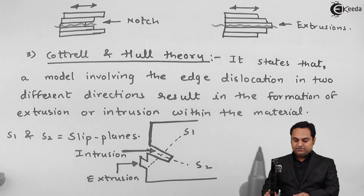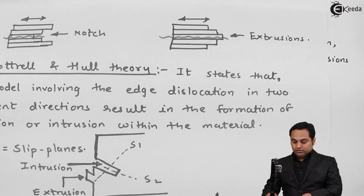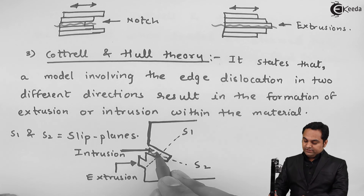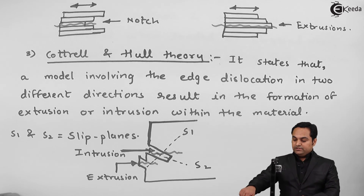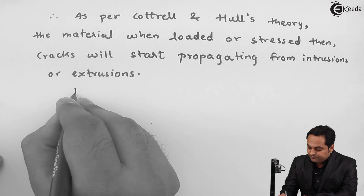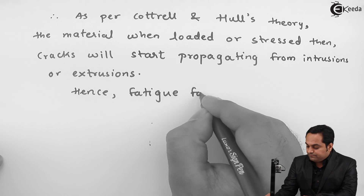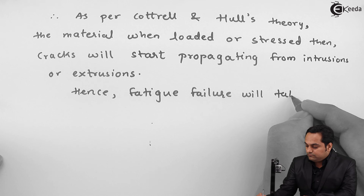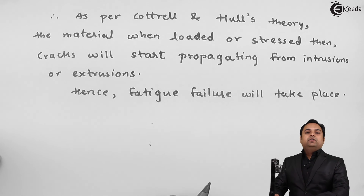As per Cottrell and Hull's theory, when the material is loaded or stressed, cracks will start propagating from intrusions or extrusions, because at those regions the area is less. Hence, fatigue failure will take place after the cracks are formed.